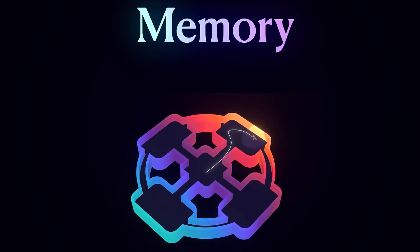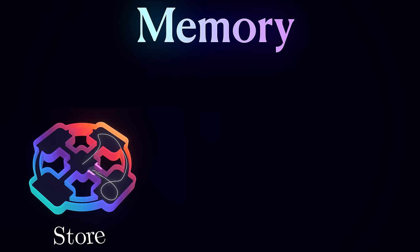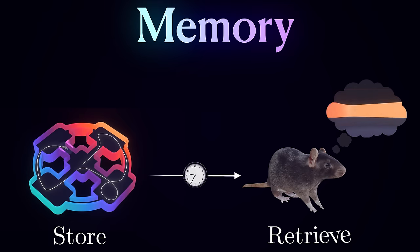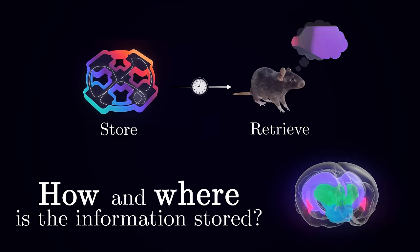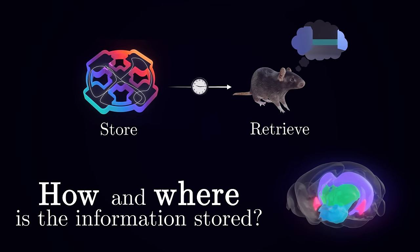The concept of a memory seems pretty intuitive to us. It is the ability to store information about particular experiences and reconstruct them at later times through memory retrieval. But where and how is this information stored inside the brain on a physical level?